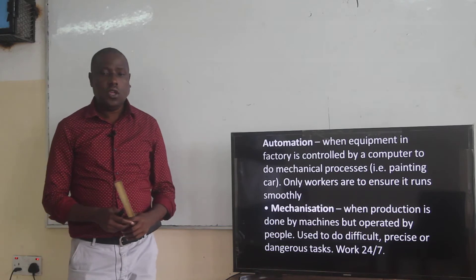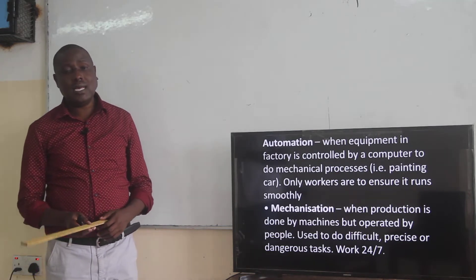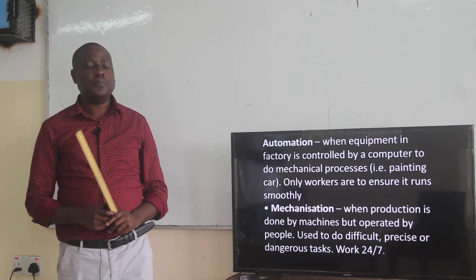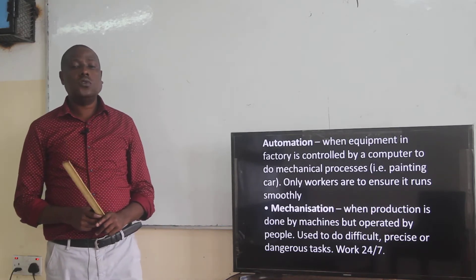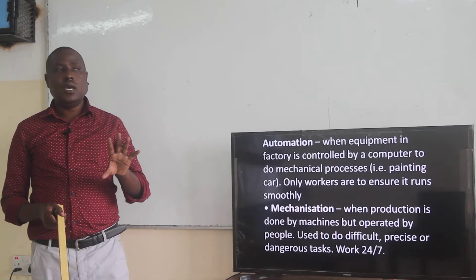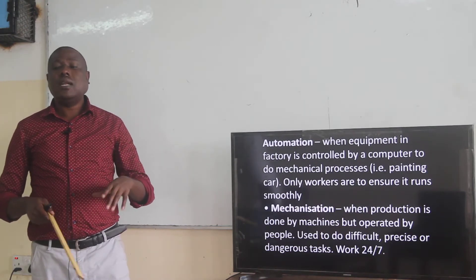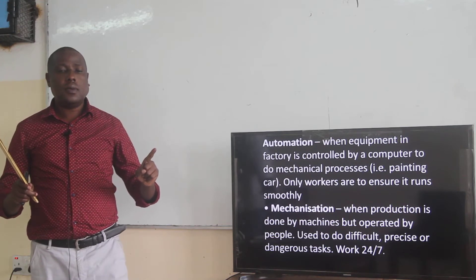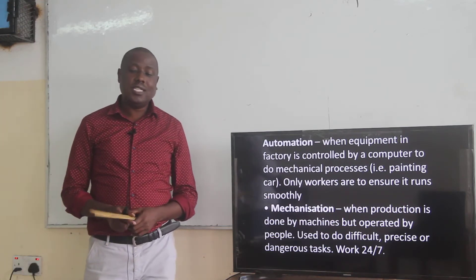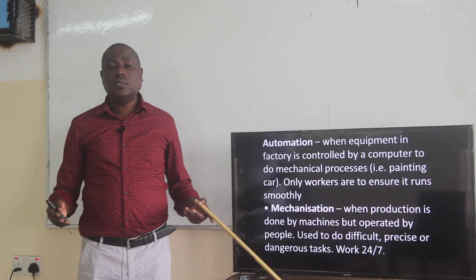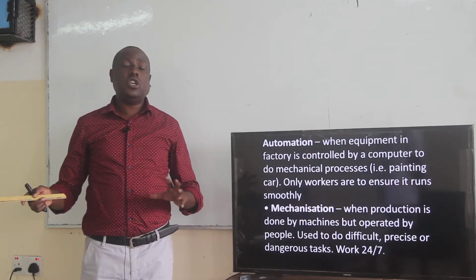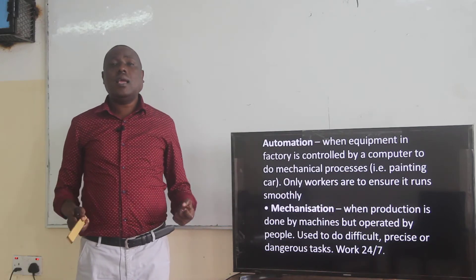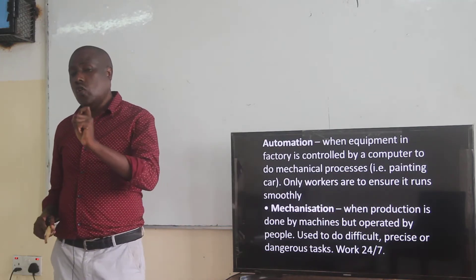Mechanization is when production is done by machines but operated by people. The work is being done by machines, but the machines are being operated by people. For example, in tea picking — when you want to pick tea leaves — we have those machines that are used to pick, but the machines are mechanically operated by human beings. That is mechanization.